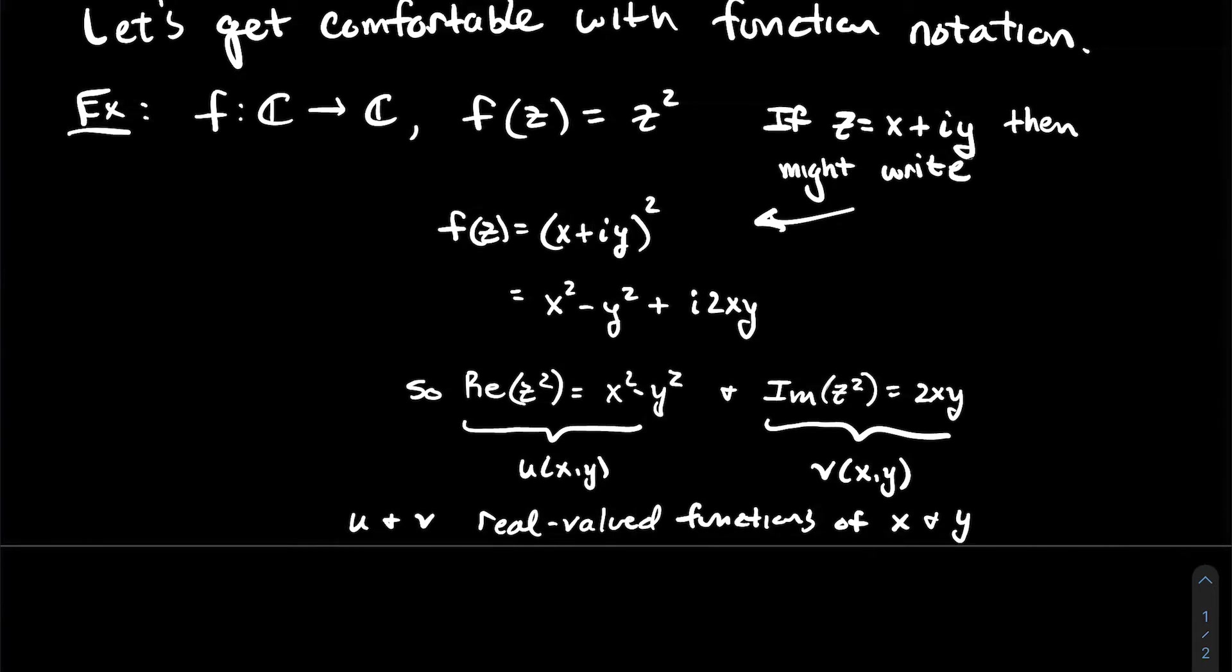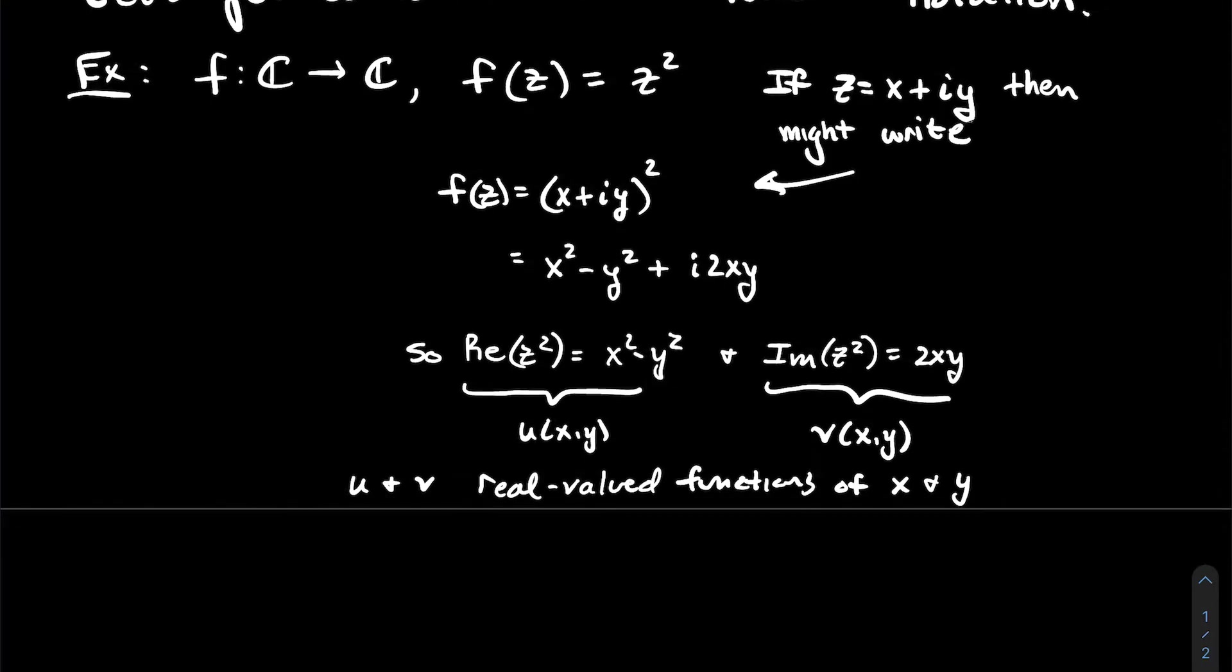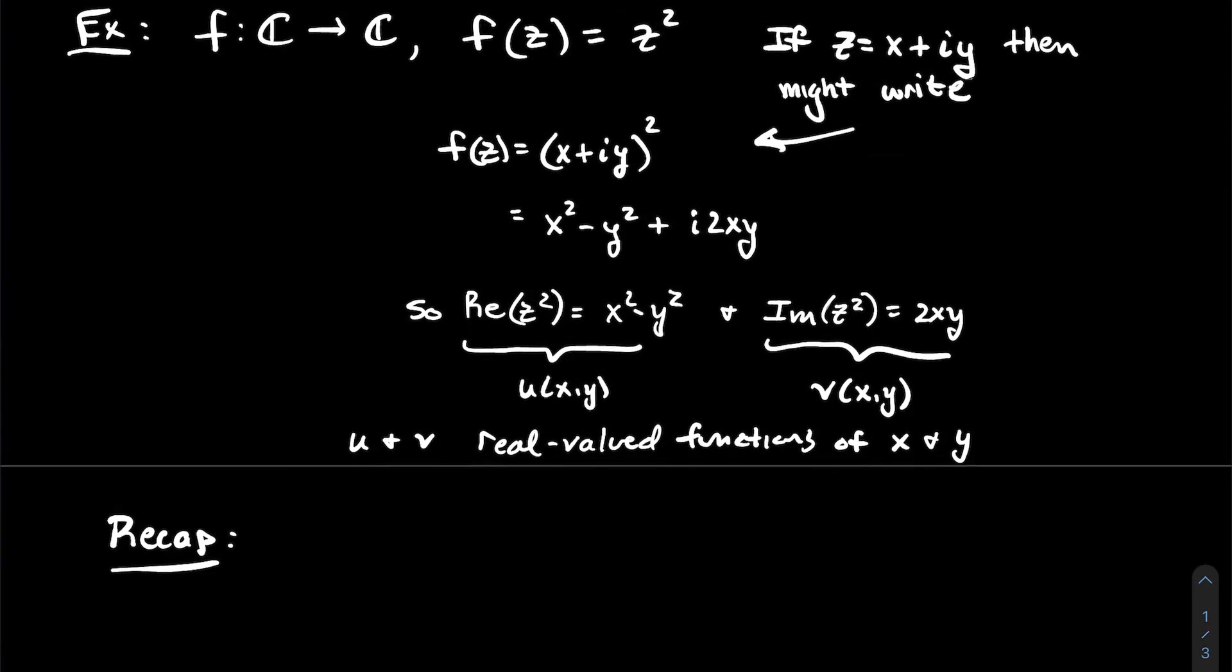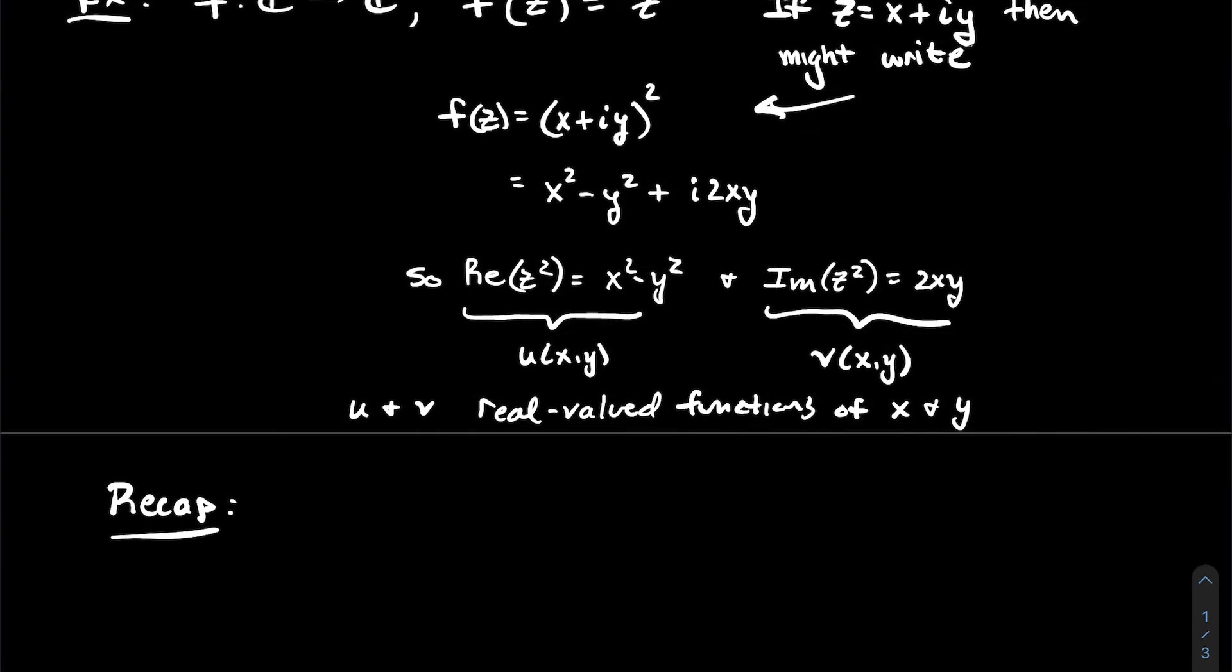And so what I'm getting at here is that I've got a real part of this function u and an imaginary part of this function v, where u and v are just real value functions of two real variables. And so here's the recap to put it all together to try to say a little bit more clearly, complex functions have real and imaginary parts too, just like complex numbers do.